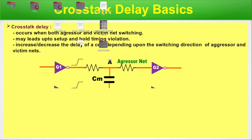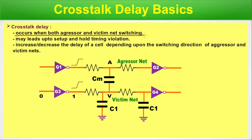Crosstalk delay basics: crosstalk delay occurs when both aggressor and victim net are switching. In crosstalk noise, the victim net was always at a steady state. When both aggressor and victim net switch together, that effect is crosstalk delay. Crosstalk delay can lead to setup and hold timing violations. It increases or decreases the delay of a cell depending on the switching direction of aggressor and victim nets — whether they switch in the same direction (low to high or high to low) or in opposite directions.